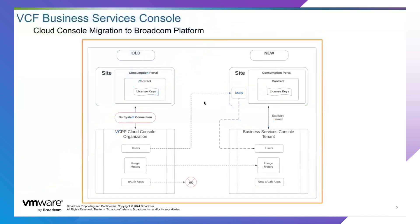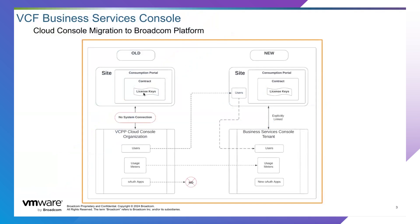If we take a look at this diagram, the current architecture that is in place is depicted on the left, with the future architecture being depicted on the right. Today, VCSP partners have sites, and if those sites also have valid and active commit contracts, the site was also going to have a consumption portal where users with the appropriate roles and permissions are able to interact with the contracts and generate license keys. We also have repurposed VCPP Cloud Console organizations and their usage meters to be part of the new VCSP program. However, there is no explicit systematic connection between this site and the VCPP Cloud Console organization — each portal is completely independent of the other.